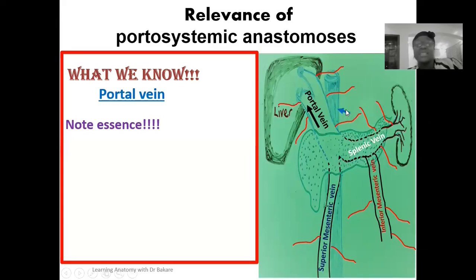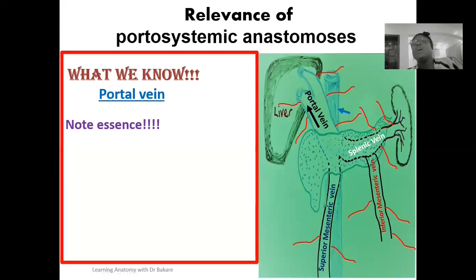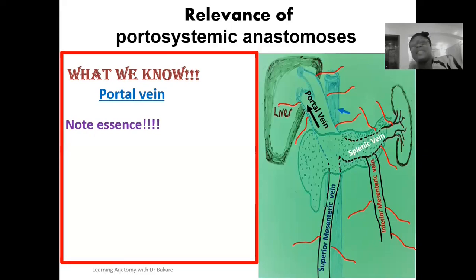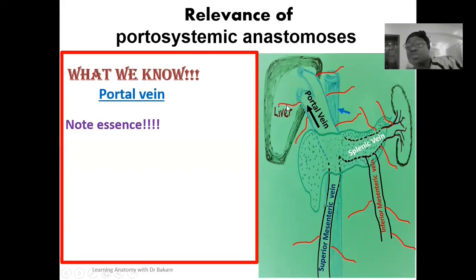The blood from the gastrointestinal tract is directed into the portal vein so the liver can produce its own substances. On the other hand, it is supposed to be directed into the inferior vena cava, which would meet with the superior vena cava to form the vena cava, and the deoxygenated blood would be directed into the right atrium. Because the liver needs the portal vein to deliver nutrient-rich blood to it, when there is blockage of the portal vein, this blood needs to create another path.